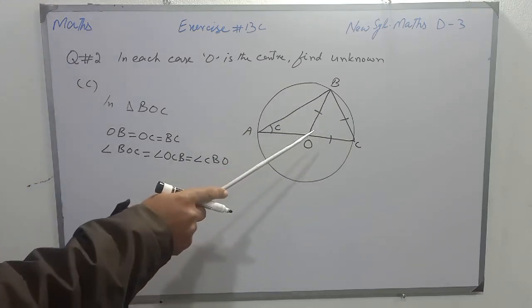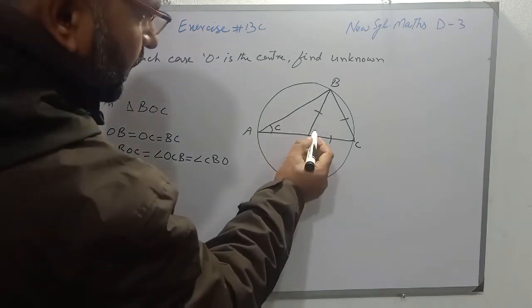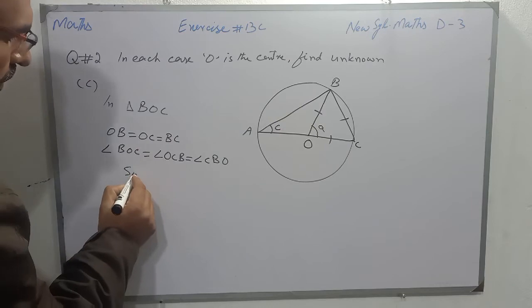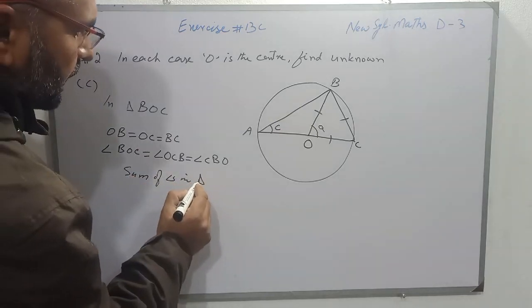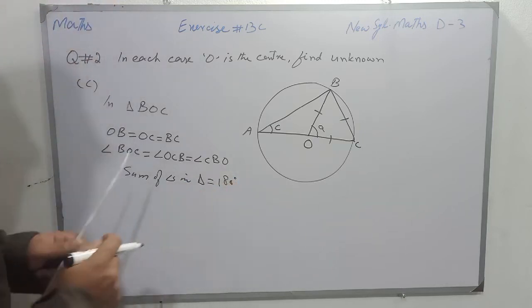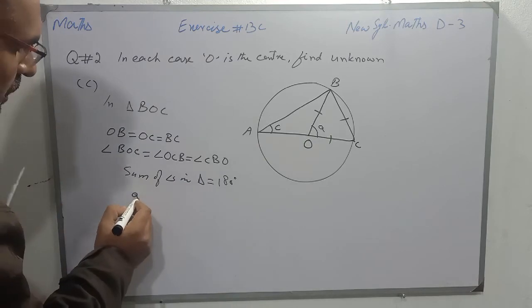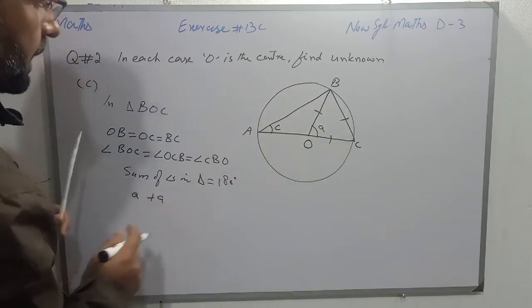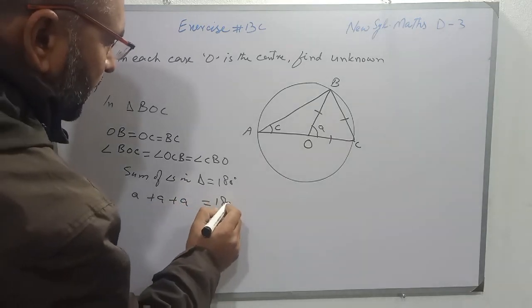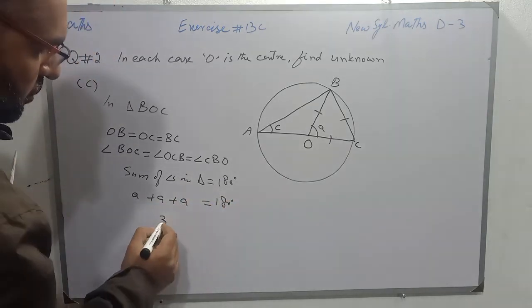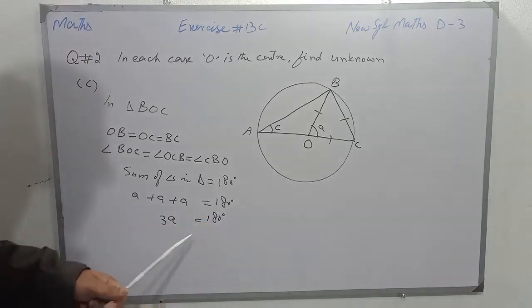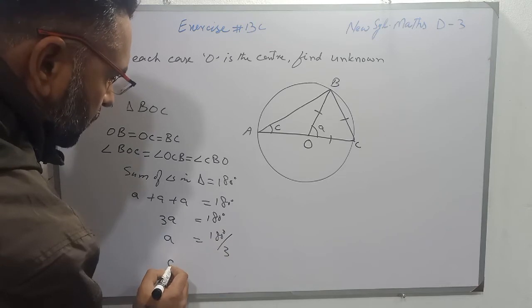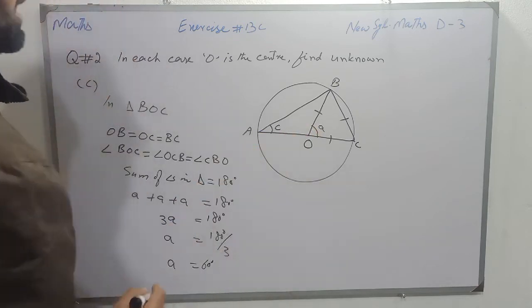The sum of angles in a triangle is equal to 180 degrees. Naming each angle as A: angle BOC equals angle OCB equals angle CBO, all equal to A. So A plus A plus A, meaning 3A equals 180 degrees. Dividing both sides by 3 gives 60 degrees. So the value of each angle in equilateral triangle BOC is 60 degrees.